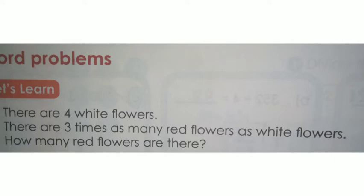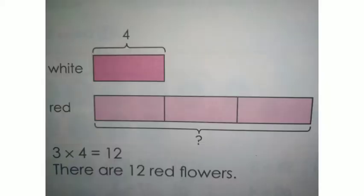How many white flowers are there? There are 4 white flowers. How many red flowers are there? We don't know that. A clue is given to find how many red flowers there are: 3 times as many red flowers as white flowers. So we have to multiply white flowers 3 times, which means 3 into 4 equals 12.